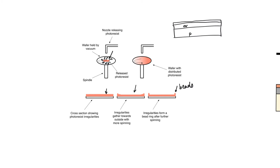Solidifying the photoresist is done by baking it. We introduce it into an oven that must be oxygen-poor, because heating in the presence of oxygen would cause oxidation of the materials. All we need from the oven is to evaporate the water content of the photoresist so it solidifies. Baking is done in steps: a soft bake, sometimes an intermediate bake, and then a hard bake.